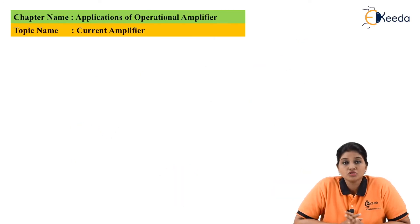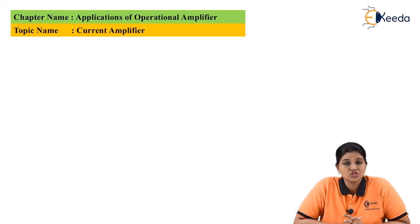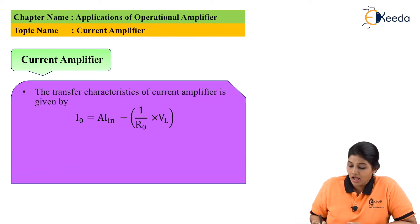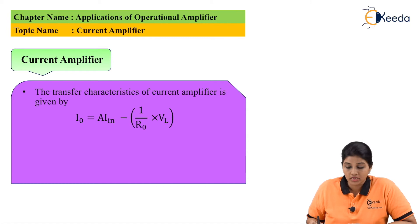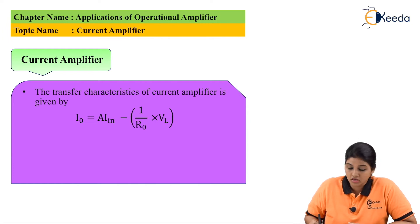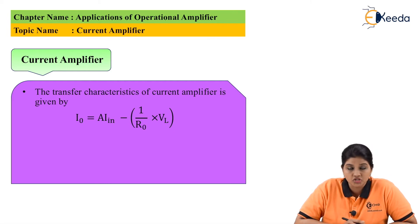Basically op-amp is used as a voltage amplifier, but we can design it in such a way that it can also be used to provide current amplification. The current amplifier characteristic equation is given by IO = A·IN - (1/RO)·VL. In this equation IO is the output current, IN is the input current, A is the gain, RO is output resistance, and VL is output voltage.